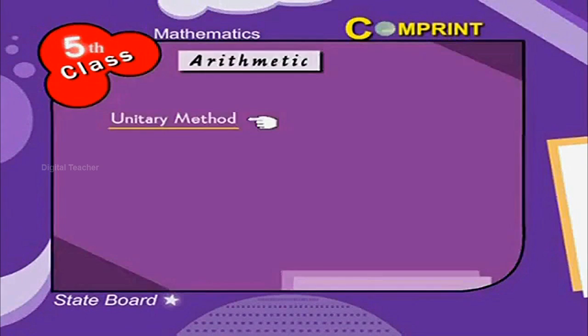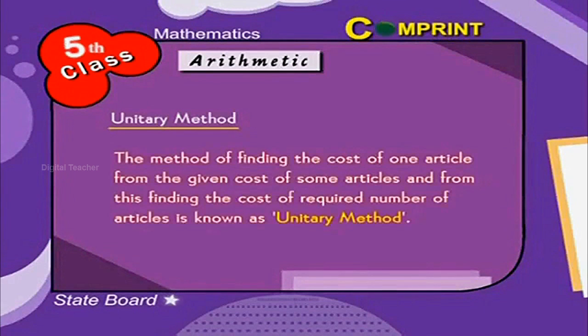Arithmetic. Unitary method: The method of finding the cost of one article from the given cost of some articles and from this finding the cost of required number of articles is known as unitary method.